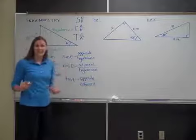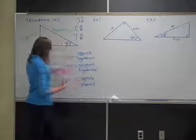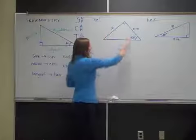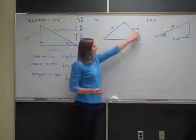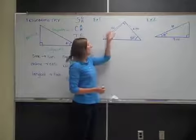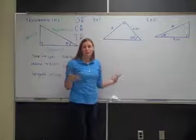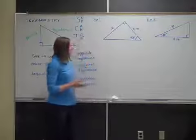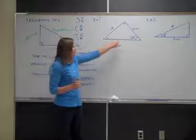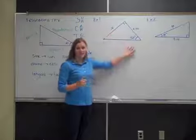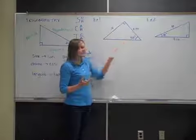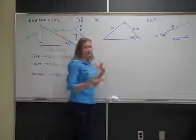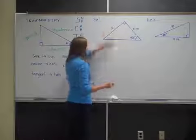Let's take a look at an example of how you would use one of these trig ratios. I have a triangle with a 50-degree angle marked, one side that is 6 meters long, and another side we don't know that we're trying to find. Start by labeling the sides relative to the angle you're given — in this case, the 50-degree angle. Let's label which side is adjacent, which is the hypotenuse, and so on.